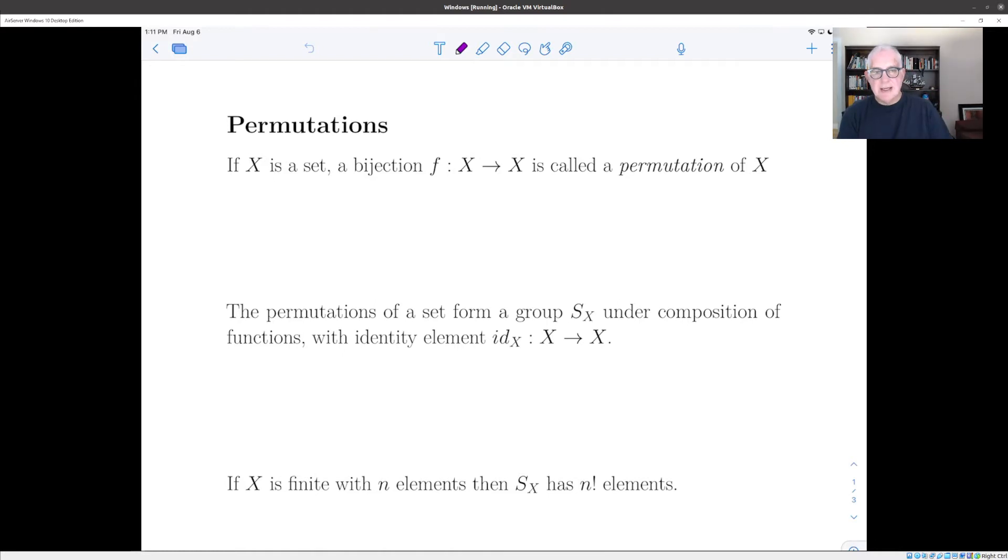So let's start with recalling a few things which we have talked about briefly before. So generally speaking, if you have a set X, then a permutation of that set, which means just a rearrangement of the elements, is given by a bijection f from the set to itself. Now, X can be in this situation any set. So for example,